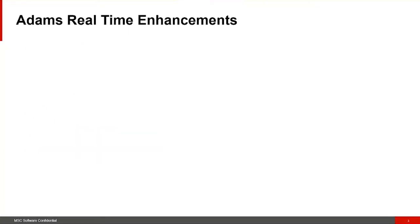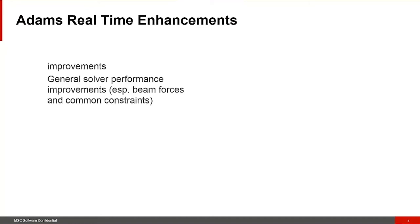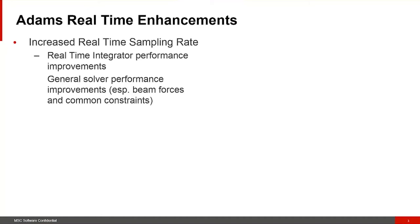In ADAMS 2018.0 we've got some exciting new enhancements in the ADAMS real-time product. First, increased real-time sampling rate — meaning the models can run faster and keep up with real-time at a faster rate. This has been accomplished through two primary areas: performance improvements in the real-time integrator itself, and general solver performance improvements which benefit everybody, not just users of ADAMS real-time.